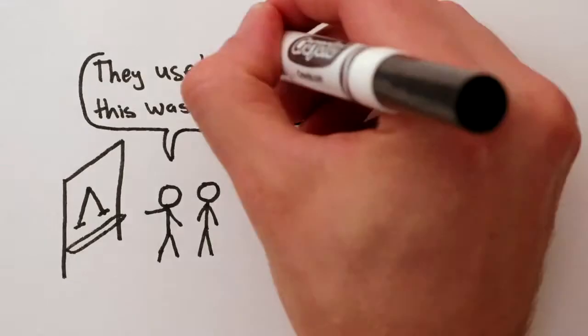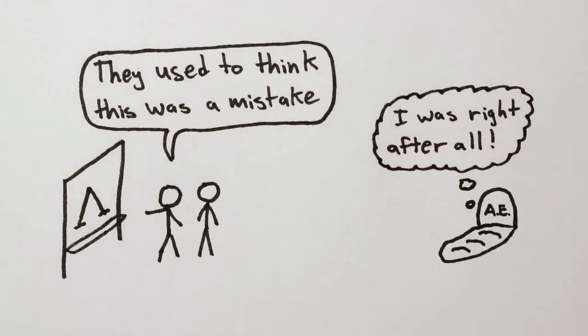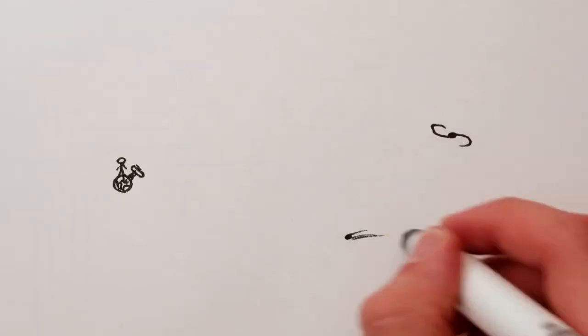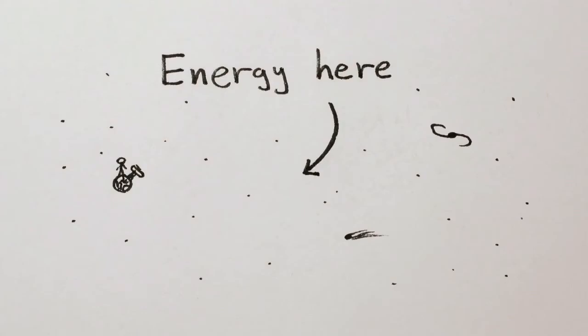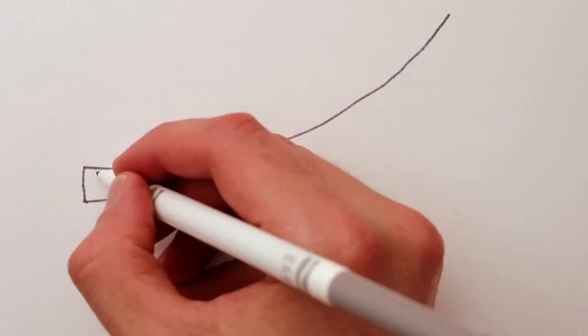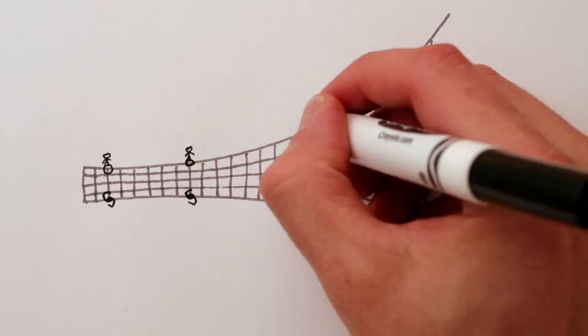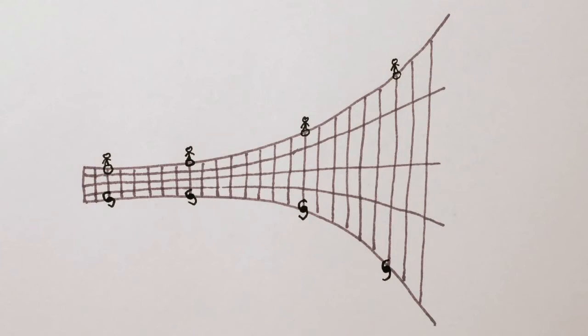But we're not completely baffled. We have a good theoretical model handed down to us by Einstein. The idea that even empty space has energy, what we call vacuum energy or dark energy. And this vacuum energy pushes space itself. It causes distant galaxies to move away from us faster and faster. That's where the acceleration comes from.